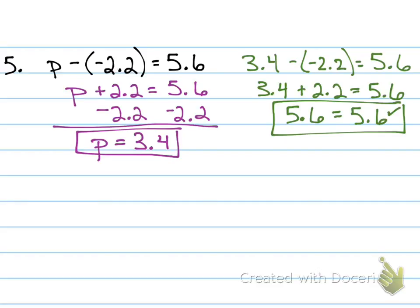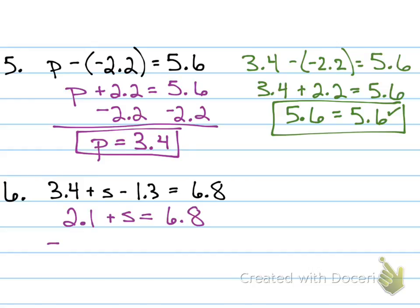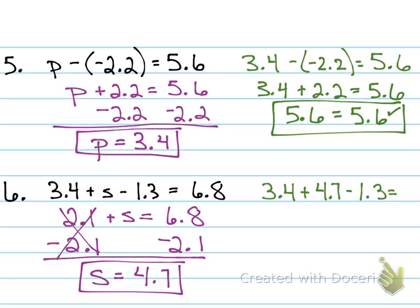Number six — what can I do first before moving numbers? There's a negative in front of that 1.3, so I have to recognize that's a negative and subtract. Combine those terms, then subtract 2.1 from both sides — s equals 4.7. Who got 4.7? Very good.